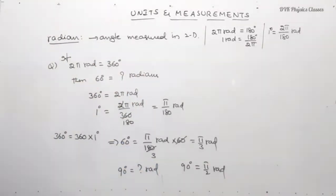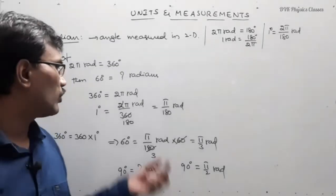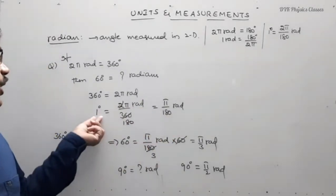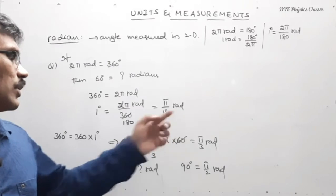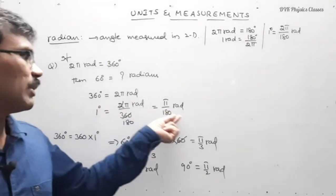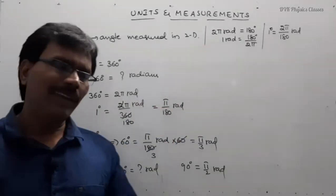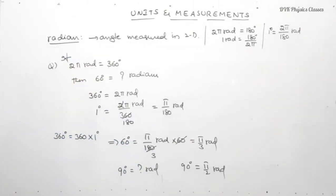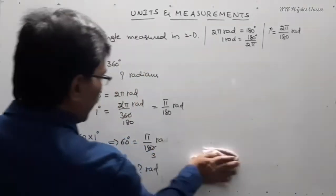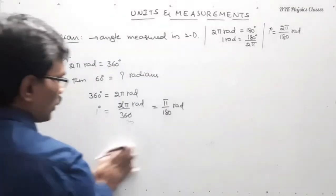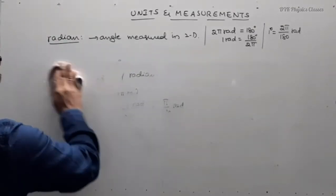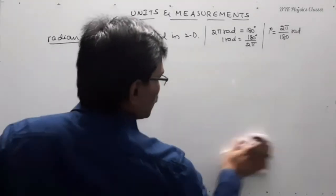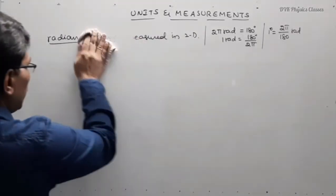Similarly, 270 degrees equals how many radians? If you know 1 degree equals pi by 180, just multiply by 270 on both sides. For 180 degrees, multiply both sides by 180. Like that, for any degree you can express the angle in radians. This is about plane angle. Definition of 1 radian: angular displacement theta equals 1 radian when the arc length equals the radius of the circle.